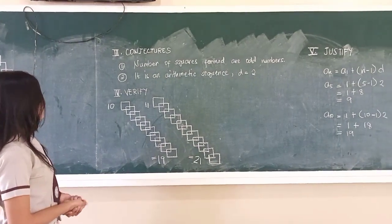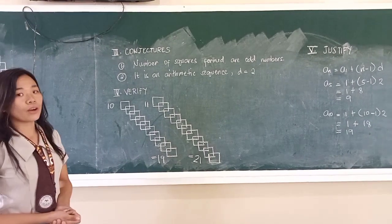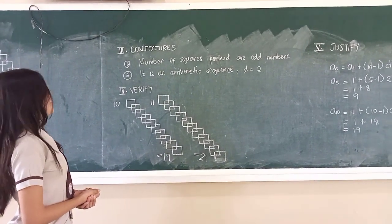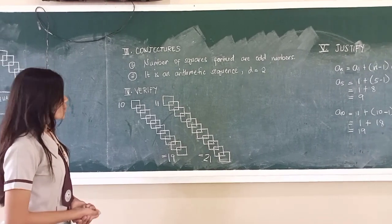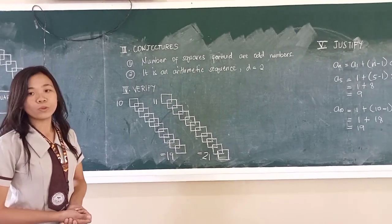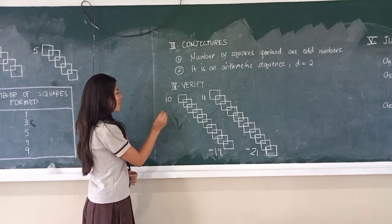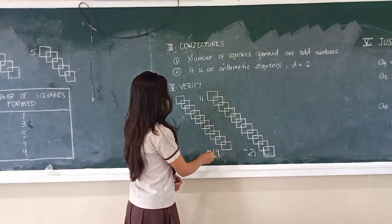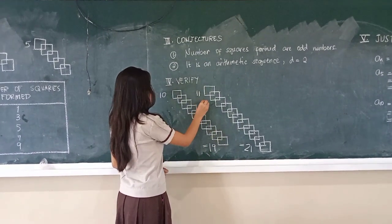From the data we have gathered, the conjectures are: First, the number of squares formed are odd numbers. Then two, it is an arithmetic sequence with a common difference of two. So when ten squares are chained, it forms 19 squares. Then when eleven squares are chained, it forms 21 squares.